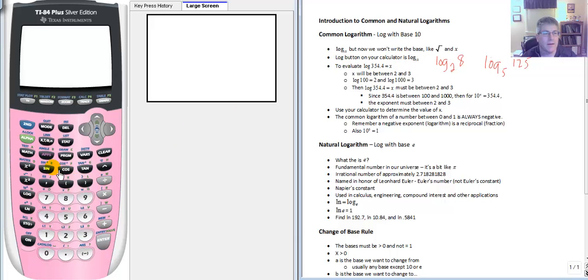So the log button on your calculator log is for log base 10. So if we want to evaluate log base 10 of 354.4, we just say log of 354.4. So what we're saying here is 10 to what power is 354.4. That system log base answer equals exponent hasn't changed. You know log base 2 of 8 that simplifies to 3. Log base 5 of 125 also simplifies to 3. I probably should have chosen like log base 5 of 25. Now that simplifies to 2.